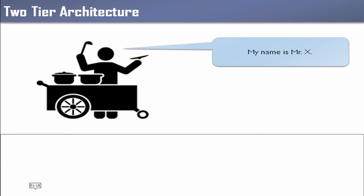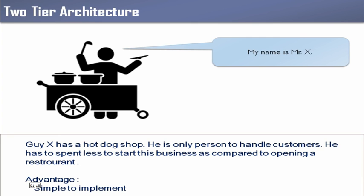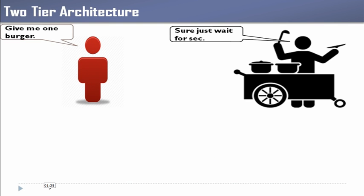Let's assume there is a person named X, and this person wants to start a hot dog business. He spends some money, buys a cart, and immediately starts his business. The positive side of this business is that it's very easy to implement — it requires less effort and can be started immediately. If anyone comes to Mr. X to buy a hot dog, they will directly contact him. He is the service provider and the customers are service takers.